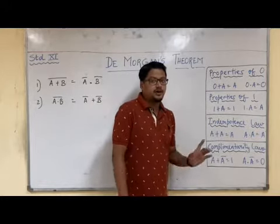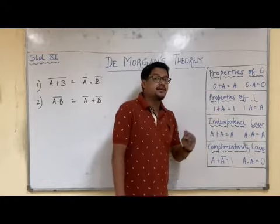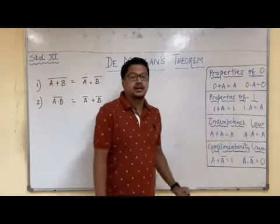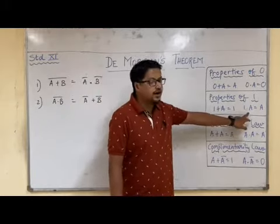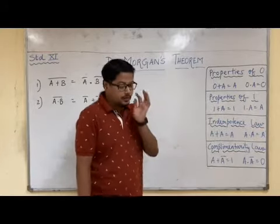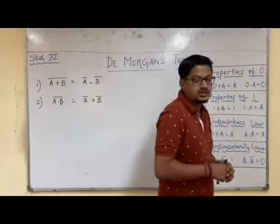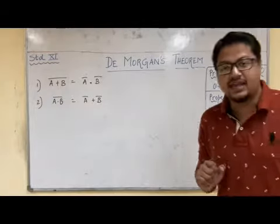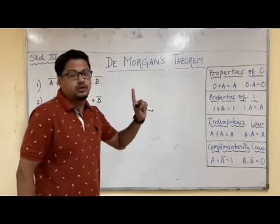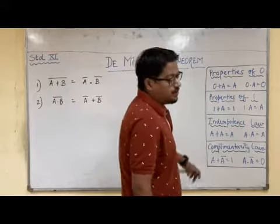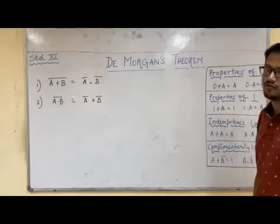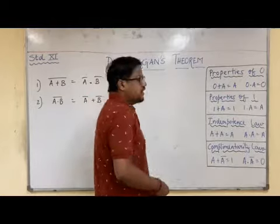Properties of 1 — very important. 1 plus any variable is 1. 1 dot any variable is that same variable. In our case, 1 dot A is A, and 1 plus A is 1. So you have to remember: properties of 0 — 0 plus A equals A, 0 dot A equals 0. Properties of 1 — 1 plus A is not equal to A; 1 plus A equals 1, and 1 dot A equals A.